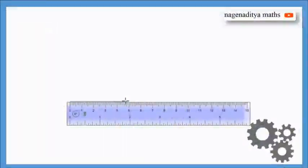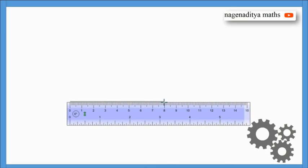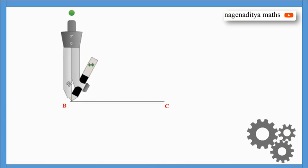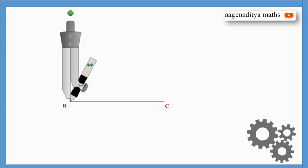So let us start the construction. First we have to draw a line segment with 8 cm and it is denoted by BC.